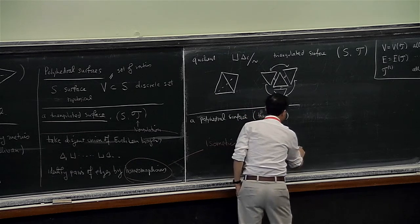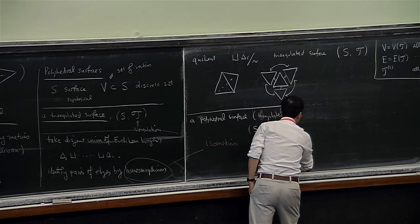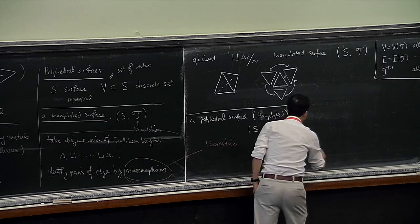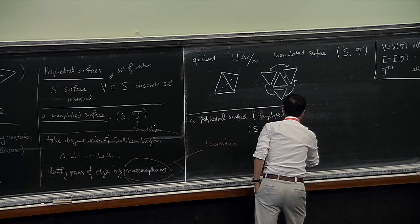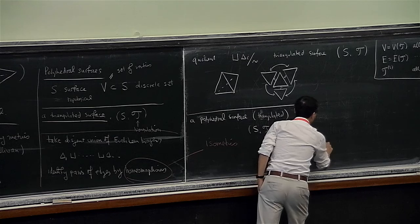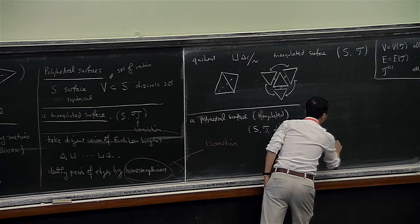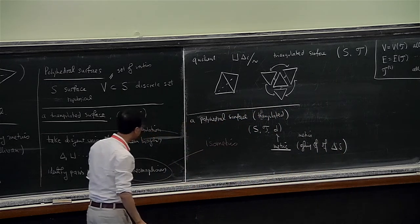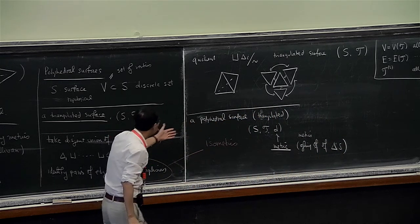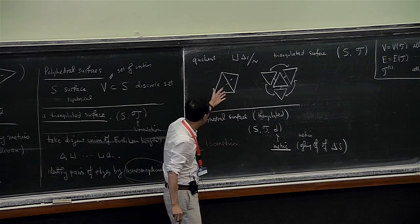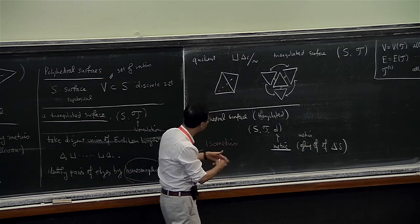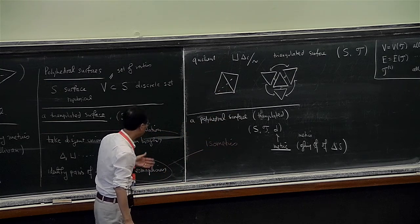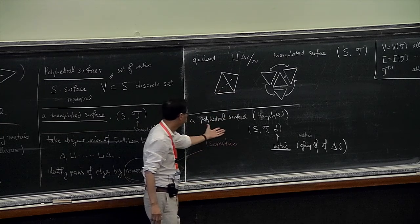The quotient space gives you a triangulated surface — because isometries are homeomorphisms — but it also produces a metric structure. These triangles are not arbitrary: if two edges are identified they must have the same length and be glued by isometry. So this is a surface triangulation where D is a metric — a metric gluing of triangles. So that's a polyhedral surface.